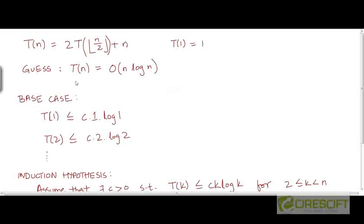Now suppose we guess that T(n) is O(n log n). How do we prove that this guess is correct? You can note that this recurrence is basically the merge sort recurrence, or almost the same as the merge sort recurrence. The difference is that we don't have a constant c with the n, which doesn't make any difference anyway. And we have this additional floor operator, which we will see again doesn't make any difference to the asymptotic complexity of T(n).